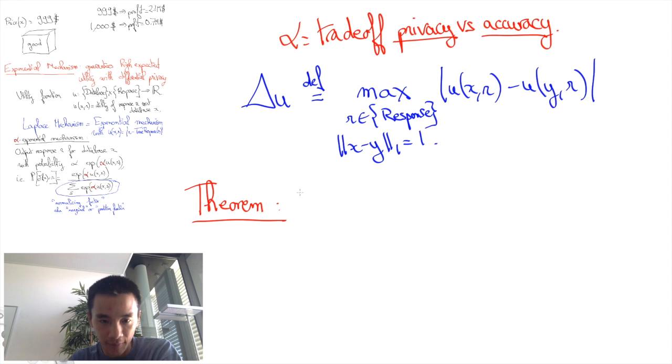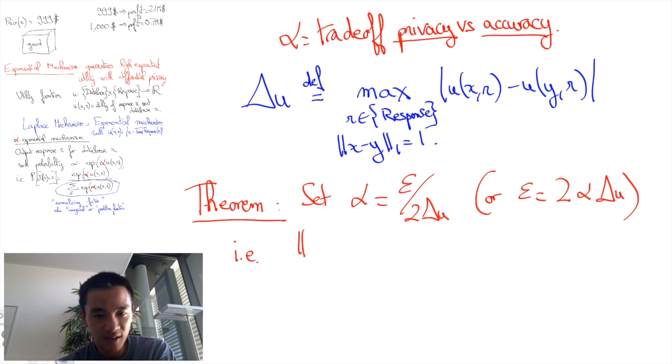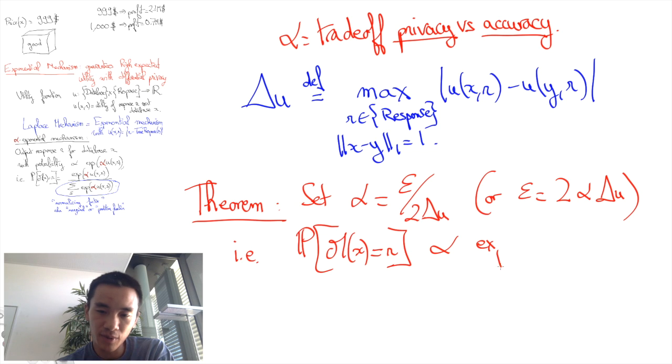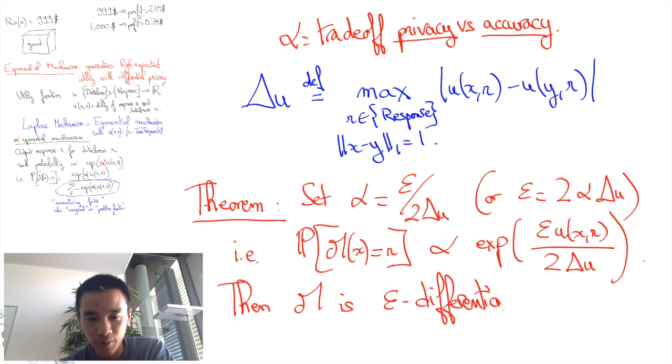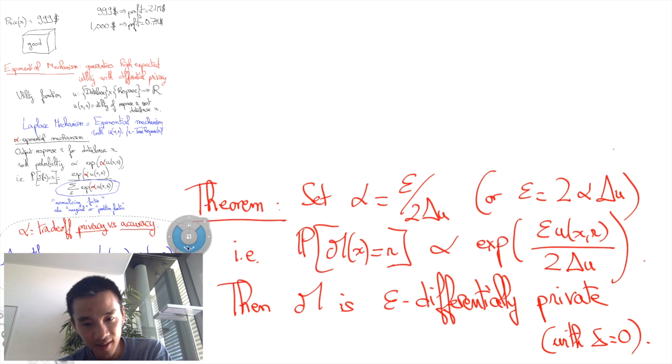Then we have the following theorem. The exponential mechanism with alpha equals epsilon divided by 2 delta u, i.e. such that the probability that M(x) equals r is proportional to the exponential of epsilon times u(x,r) divided by 2 delta u, is epsilon differentially private.